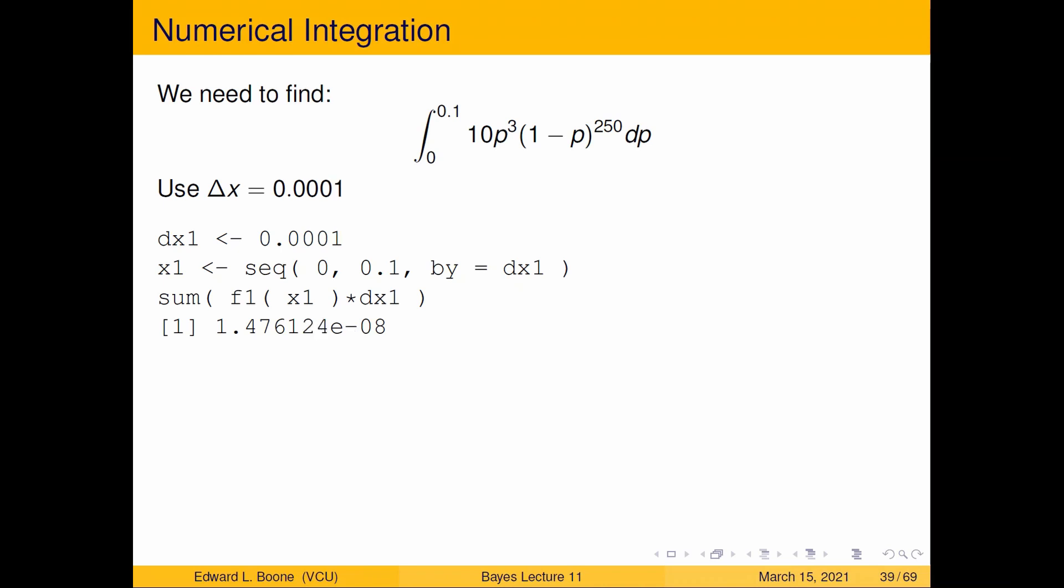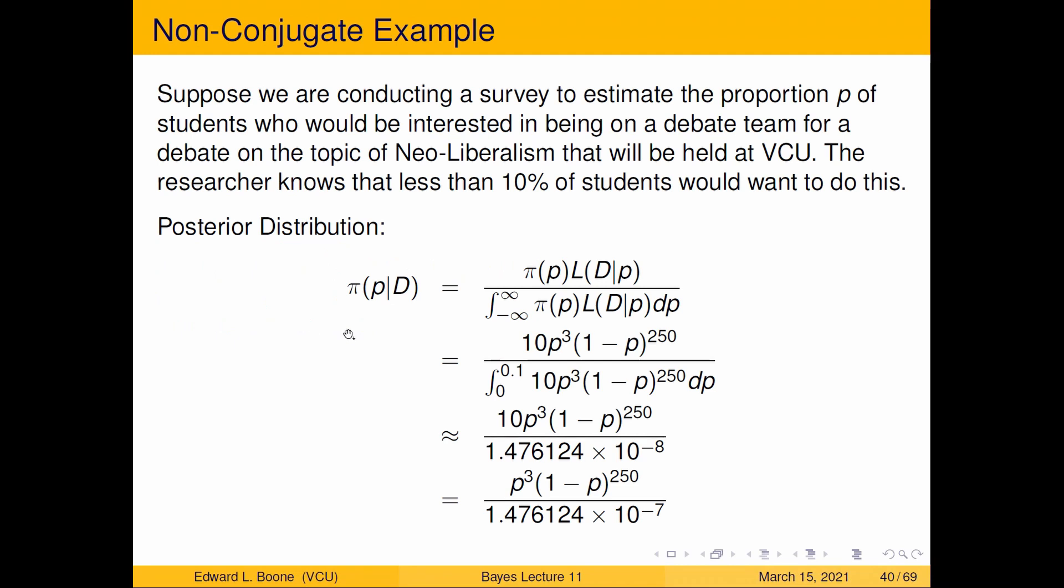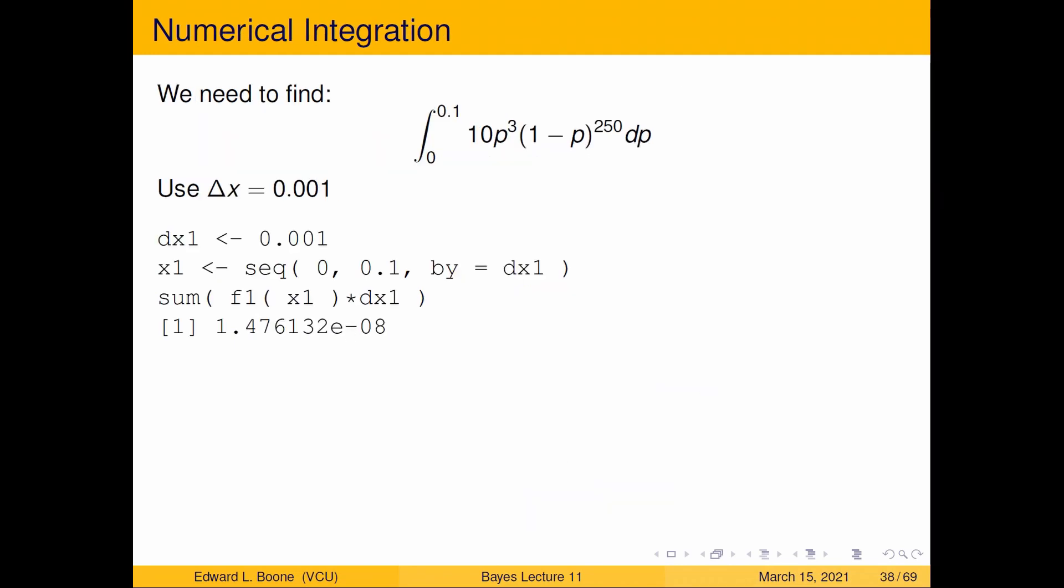If I go to 0.0001, I get 1.476124 times 10 to the negative 8. Those are pretty close to each other. If I look at that, those numbers are pretty much the same all the way out at the fourth decimal place, so I'm going to stop there. I'm not going to keep narrowing this delta x down, though you could do that and you'll get more and more accurate.